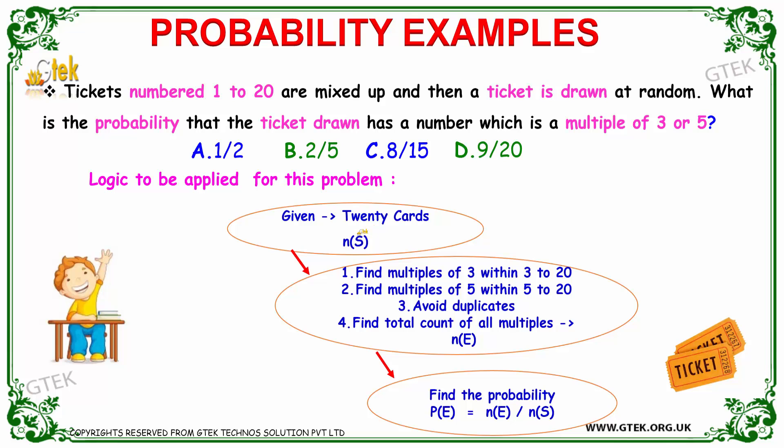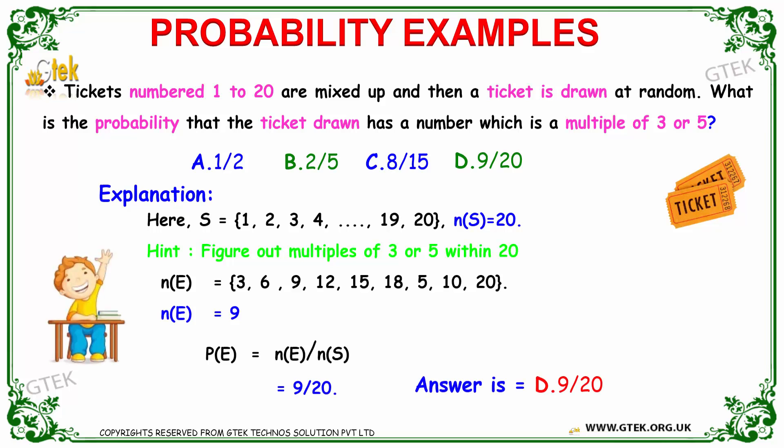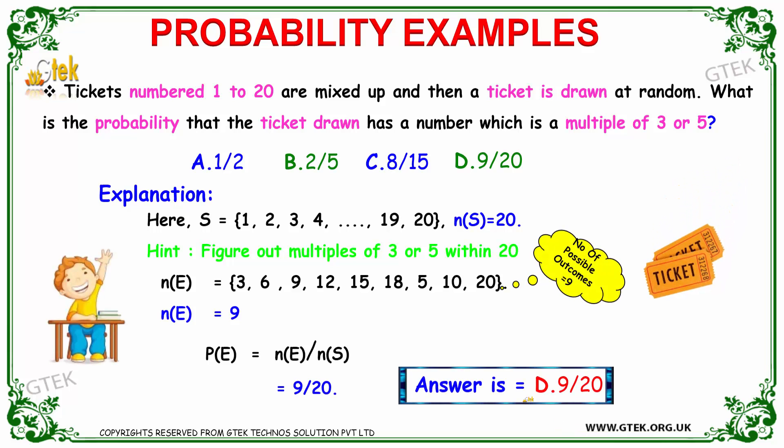This is the logic you need to apply: the number of sample space is 20. Find the multiples of 3 within 1 to 20, and find the multiples of 5 within 1 to 20. Remove duplicates, find the count, and apply the probability formula.